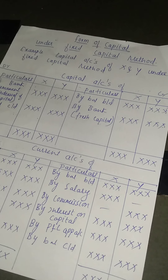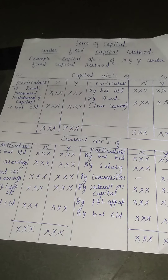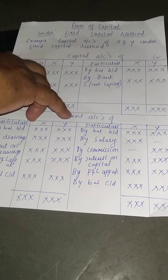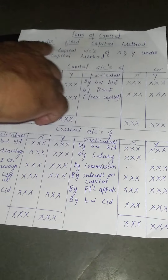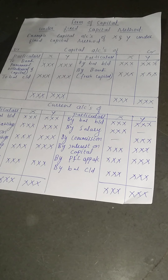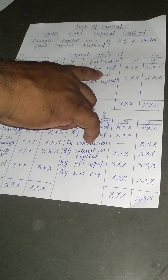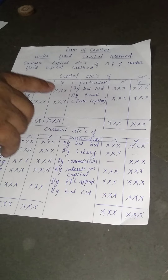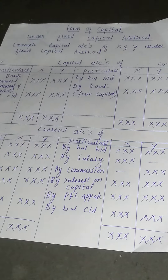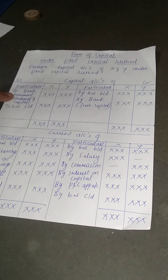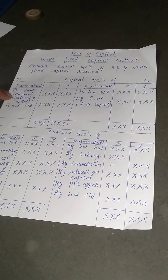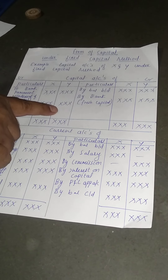Here is the format of the Fixed Capital Method. We have taken the example of partners X and Y. This is the capital account under the Fixed Capital Method. On the credit side, 'By Balance b/d' shows the opening balance — whatever was the capital of the partner in the previous year is transferred to this year. Any fresh capital brought during the year is added to the capital account. On the debit side, any permanent drawings — amounts withdrawn and never returned — are debited to the partner's capital account.